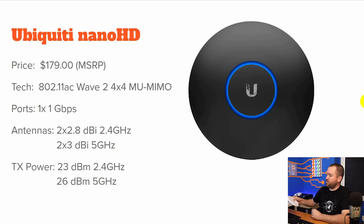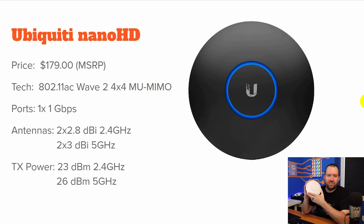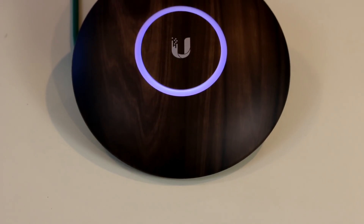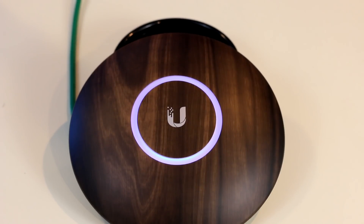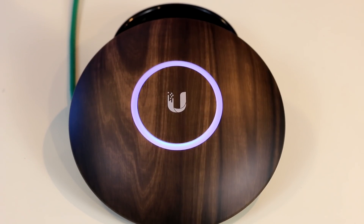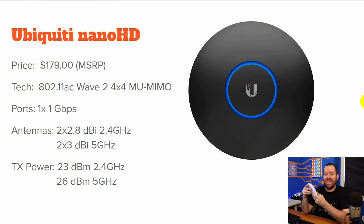Next we have the Ubiquity Nano HD. The one shown on screen here is black because these access points have a variety of different skins you can pop onto them. The MSRP on this access point is $179. It is also Wi-Fi 5 — an 802.11ac Wave 2 4x4 multi-user MIMO access point. It has one gigabit port, and for antennas, it has two 2.8 dBi antennas in the 2.4 GHz band and two 3 dBi antennas in the 5 GHz band.